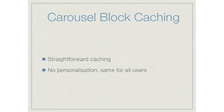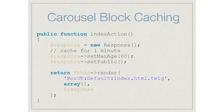Carousel block caching is really straightforward — it's the same for all users and we don't personalize it at all. The code is dead simple: in your Symfony controller action, you create your response, set a max-age of one minute, set it as public so it can be cached for all users, and render the response as normal. Varnish talks HTTP exactly the same way as the browser does, sees that information, caches it, and that's it.